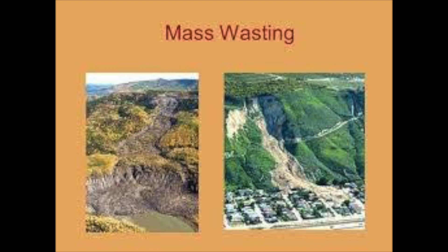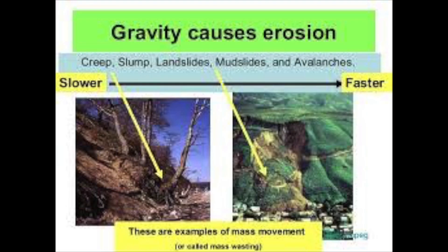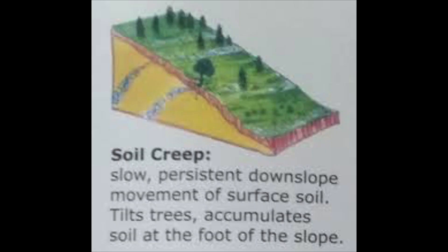Gravity erosion is called mass movement or mass wasting. There are several examples of mass movement; going from slowest to fastest, they are: creep, slump, landslides, mudslides, and avalanches. Soil creep is the slow, persistent downslope movement of surface soil. Clues include tilted trees and accumulated soil at the foot of the slope.